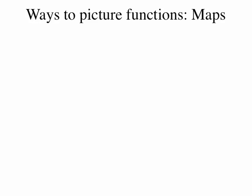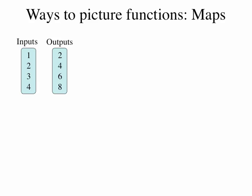Another way to show this is something called a mapping diagram. For a mapping diagram, we show the set of numbers that represents the input, typically ordered from smallest to biggest. If a number is input multiple times, we don't list it multiple times — it's simply the set of numbers we are allowed to input. Then we show the set of outputs and use arrows to connect which input goes with which output. If a number shows up multiple times, in a mapping diagram we only list it once.